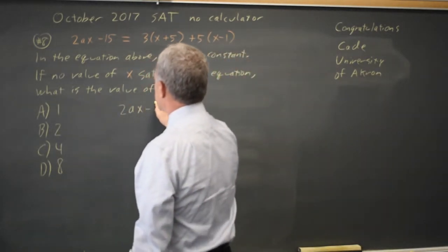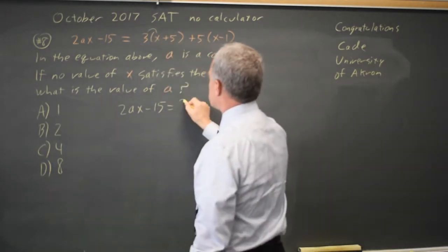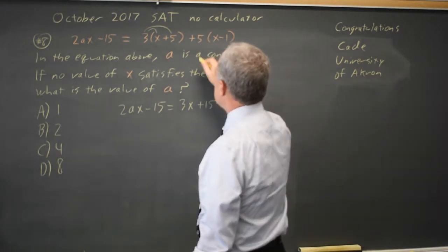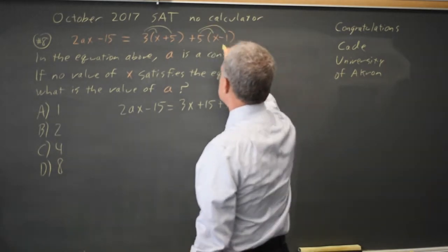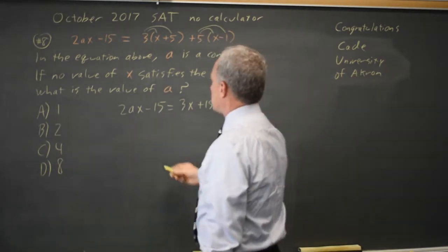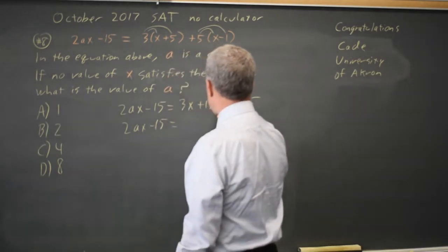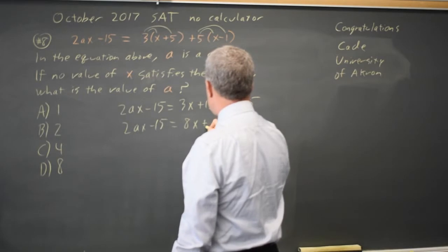The left is 2ax minus 15 equals, distributing, 3 times x is 3x, 3 times positive 5 is positive 15, 5 times x is plus 5 more x, 5 times negative 1 is negative 5. So 2ax minus 15 equals 3x plus 5x is 8x, 15 minus 5 is plus 10.